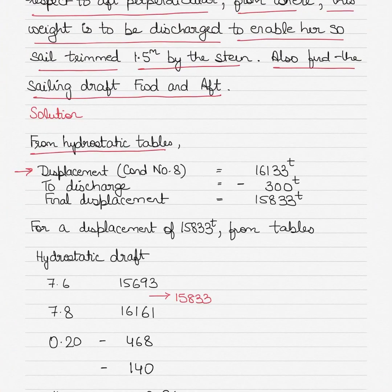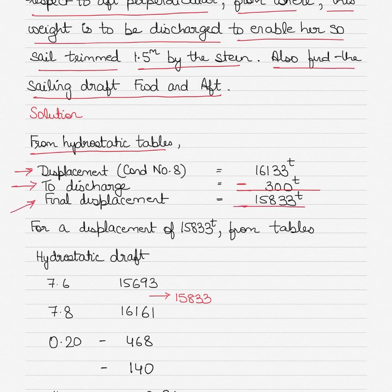The initial displacement is 16133 tons as obtained from the table. The question says we have to discharge 300 tons, so 300 tons will be subtracted from the initial displacement. The final displacement after discharging will be 15833 tons — that is, 16133 minus 300.